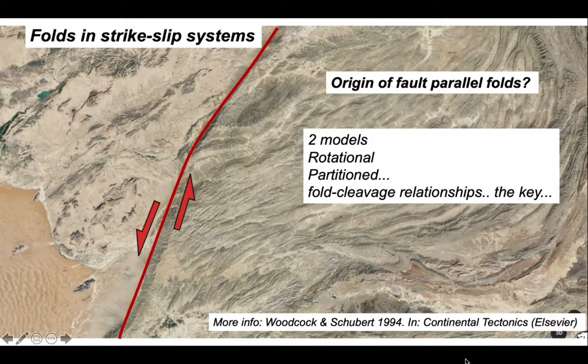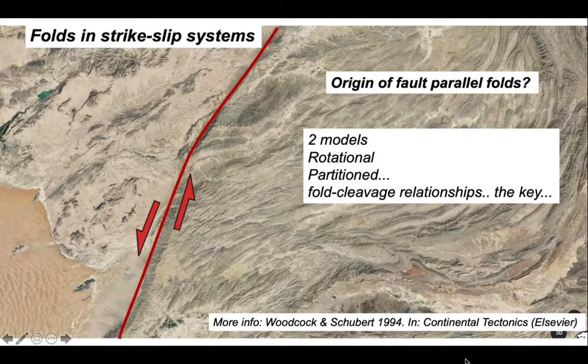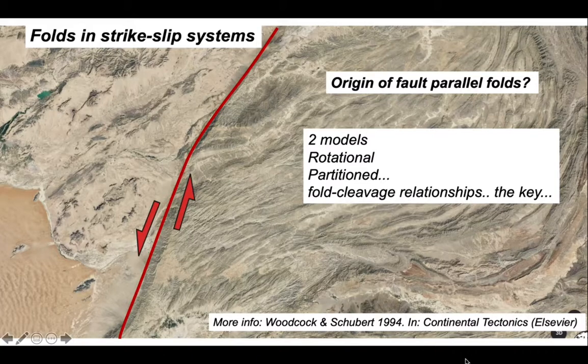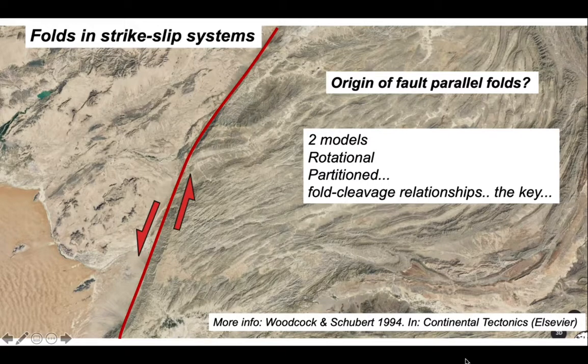So we've explored the origin of fault-parallel folds, and we've done this using two distinct models. In model 1, the rotational model, the folds form in a layer above a deeply set strike-slip fault zone. They form in an en echelon array and then spin around with increasing shear. This requires significant strain.